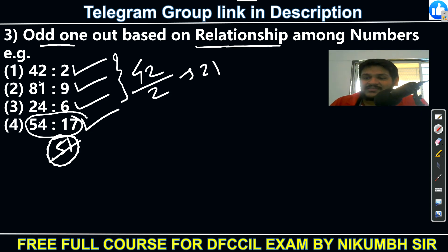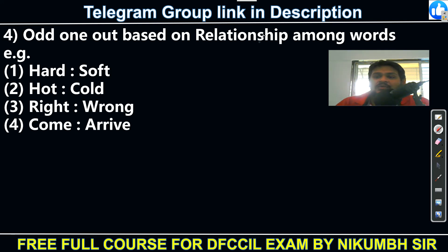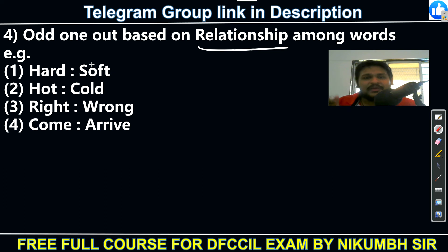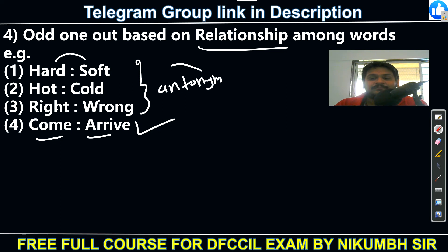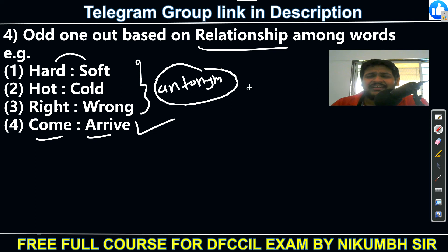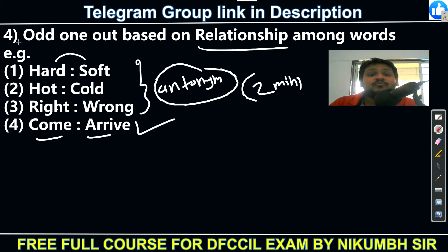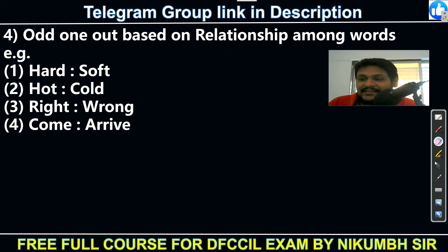The fourth type is relationship among words — GK and common sense combined. For example: antonyms like hard-soft, hot-cold, right-wrong; and synonyms like come-arrive, which have the same meaning. If all pairs are antonyms and one is a synonym, that's the odd one out. Refer to the English vocabulary PDF provided — it won't take more than two minutes to go through.